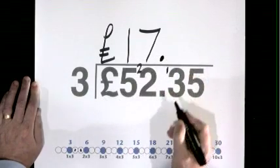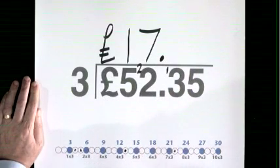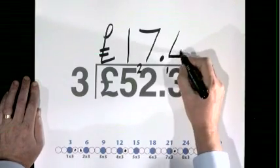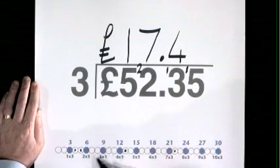Decimal point. 3 goes into 13, 13 lives here 1, 2, 3, 4 times. Remainder 1. 3 goes into 15, 5 times.